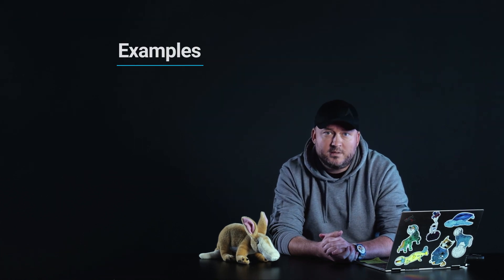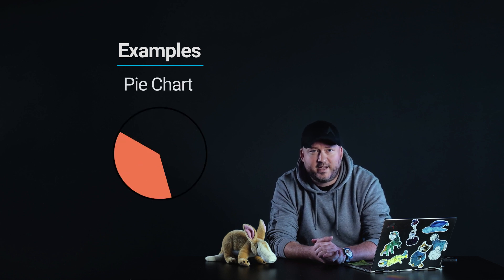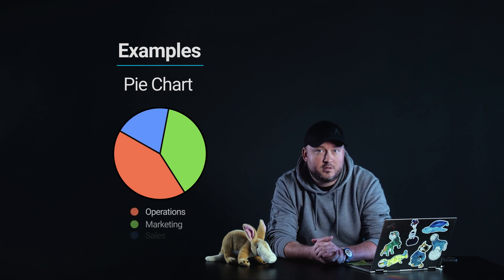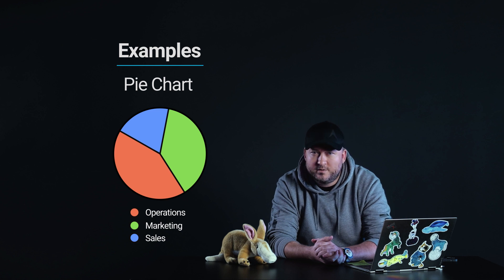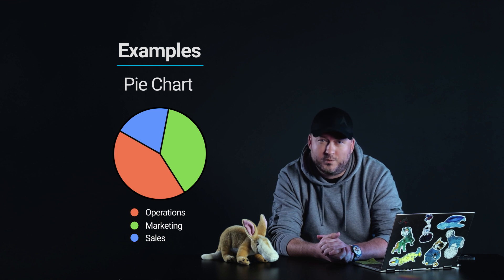Let's take a look at some examples. The following examples compare the correct and incorrect usage or implementation of accessibility. Example 1: A pie chart. The pie chart is divided into three parts that differ only by color. Below is a legend connecting labels to colors — red for operations, green for marketing, and blue for sales. People with visual impairments or color blindness may have difficulty distinguishing between the segments represented by red, green, and blue, as they depend on a color-coded legend that is not accessible to all users.